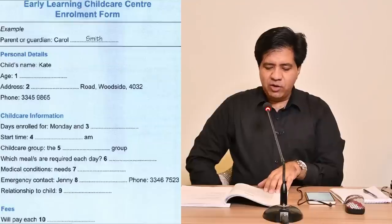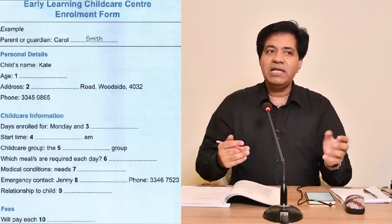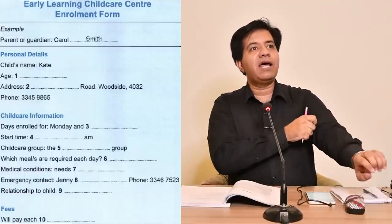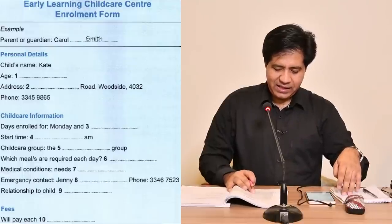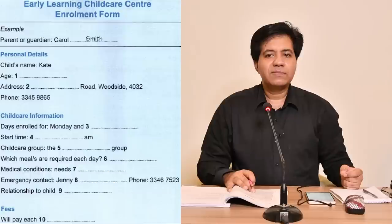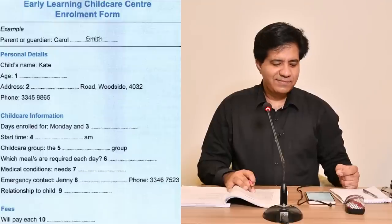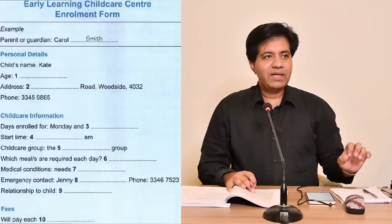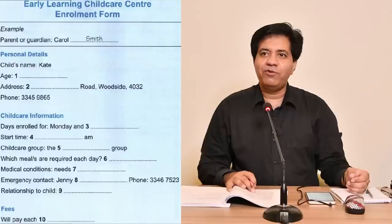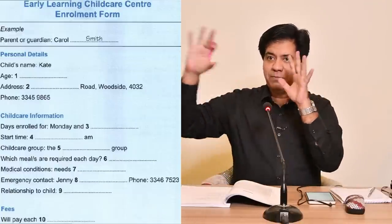Question 8: emergency contact — Jenny. Jenny is the first name; the last name is missing. They will tell us the name and if it's unusual they will spell it for us. The answer is Ball — B-A-L-L. On your answer sheet you just write B-A-L-L, Ball.